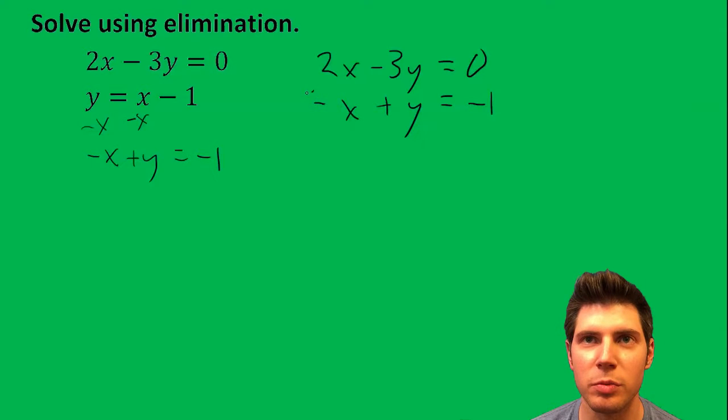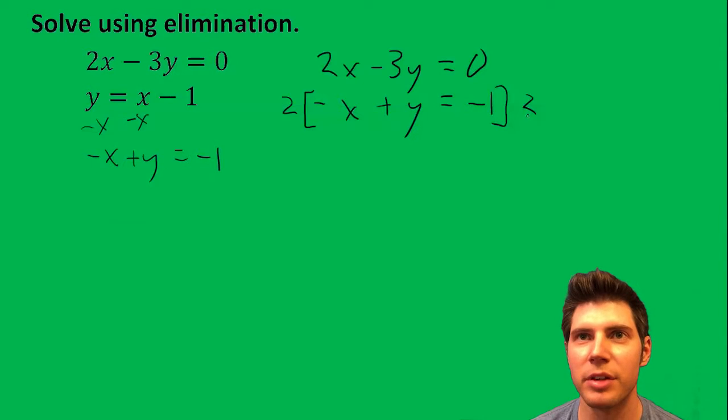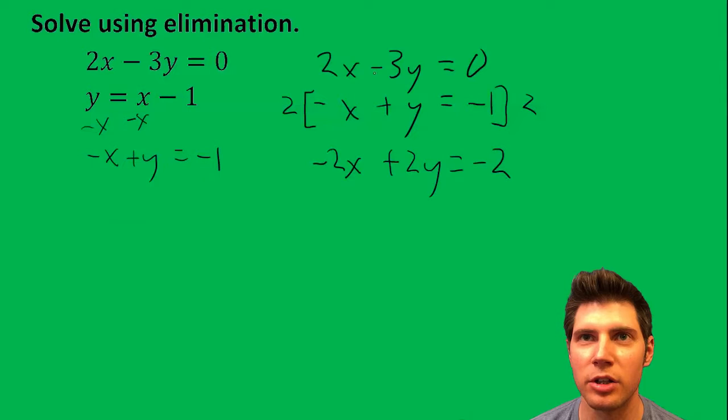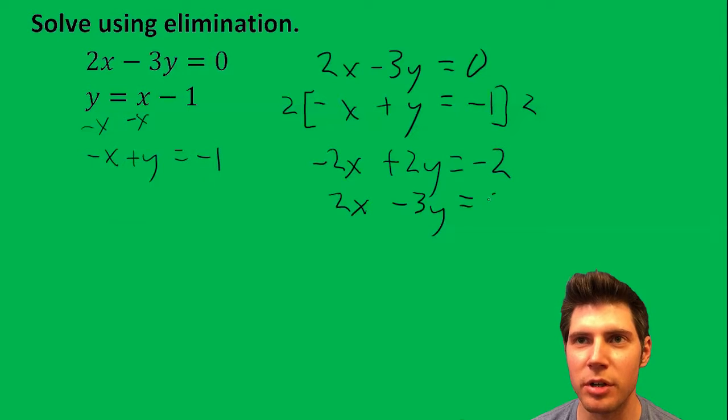So in order to do that, I need to multiply this whole row by 2. So I'm going to multiply everything by 2. So this is going to end up being negative 2x plus 2y and then equals negative 2. And I'll just bring this other one down 2x minus 3y equals 0.